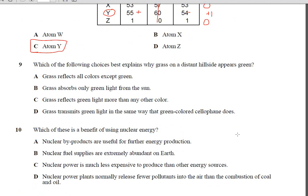All right, number 9. Which of the following choices best explains why grass on a distant hillside appears to be green? Well, MEAP does this thing where they give you all this extra information that's totally unnecessary. Grass on a hillside, grass under your feet is green, no matter what. So be careful how you read. All this question really is asking is why do we see grass as being green?